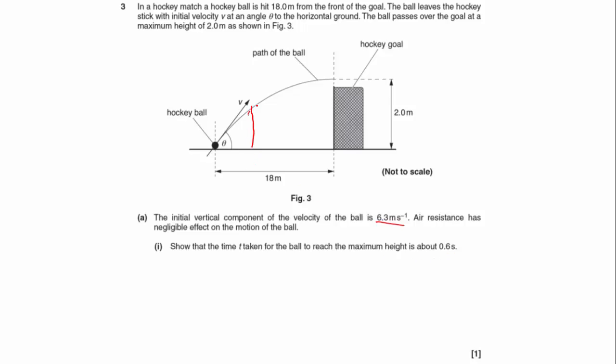So we've got the vertical component is 6.3 metres per second, and this is going to be a SUVAT type question. We know that S is going to be 2 metres vertically. The initial velocity is 6.3 metres per second. The final velocity at the top at its maximum height will be 0 in the vertical direction.